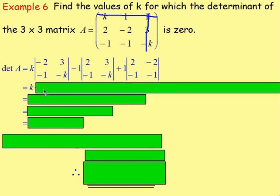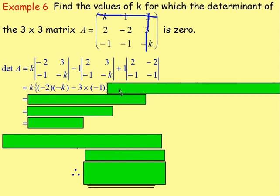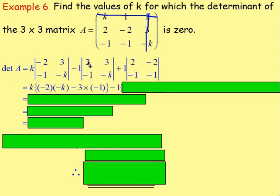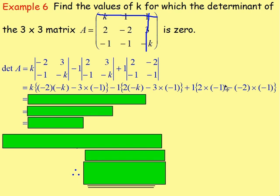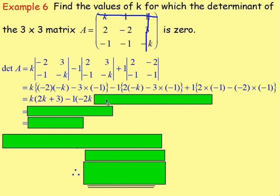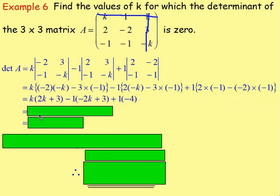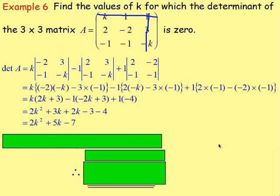Working that out: K times (negative 2 times negative K take away 3 times negative 1), take away 1 times (2 times negative K take away 3 times negative 1), plus 1 times (2 times negative 1 take away negative 2 times negative 1). This becomes K times (2K plus 3), take away 1 times (negative 2K plus 3), plus negative 4. Multiplying out: 2K squared plus 3K plus 2K minus 3 minus 4, which simplifies to 2K squared plus 5K minus 7.